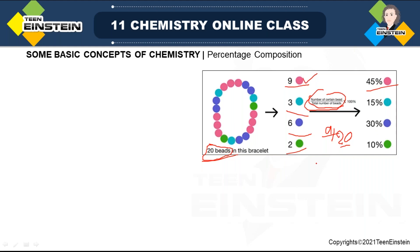Similarly, for light blue: 3 divided by 20 multiplied by 100. This formula is used each time — it's the general expression for percentage calculation that we all know. The same applies for the other two colors: 6 by 20 and 2 by 20. We know 2 by 20 is 1 by 10, so multiplied by 100 that gives 10% — very easy.